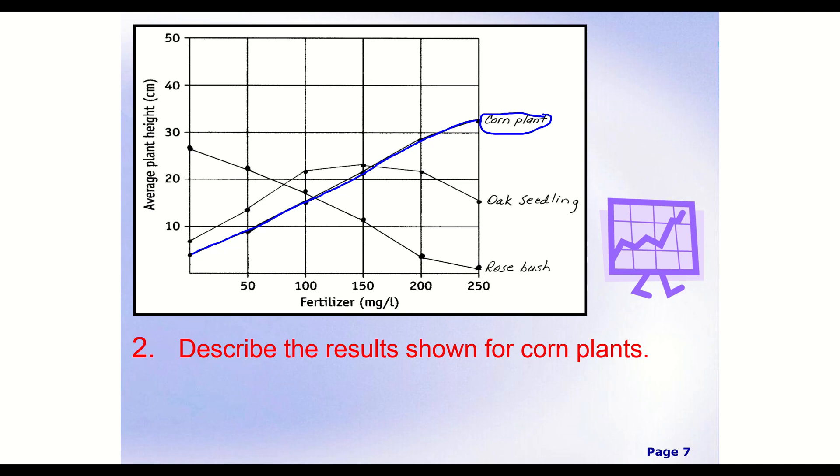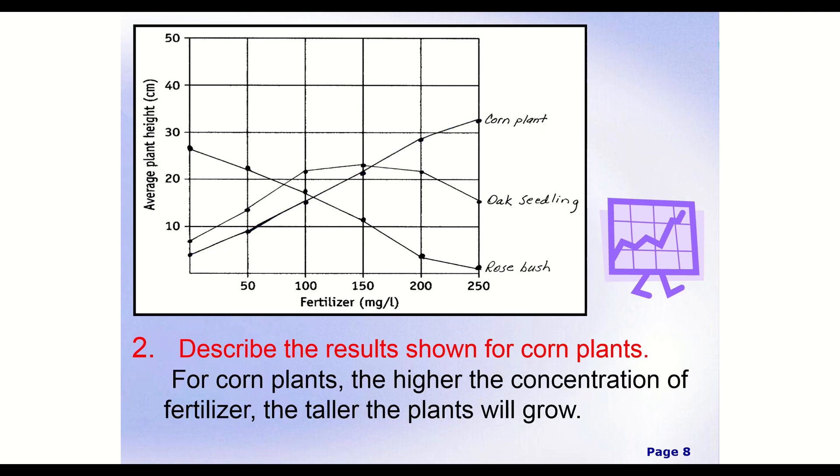So we can have the general idea that as our fertilizer amounts increase, then our plant height is going to increase as well. And pretty consistently. It may be levels off a tiny bit here, but for the most part, as we add more fertilizer, our plant height increases for corn plants. And so really, how we could write that is, for corn plants, the higher the concentration of fertilizer, the taller the plants will grow. All right, so our plants are going to be going up as our fertilizer goes up.